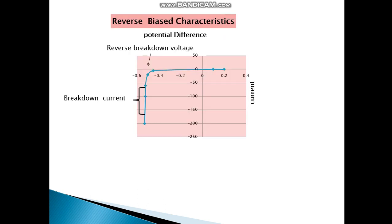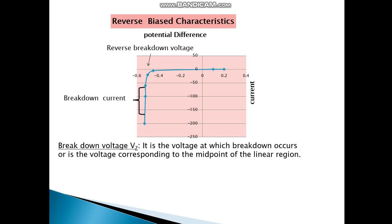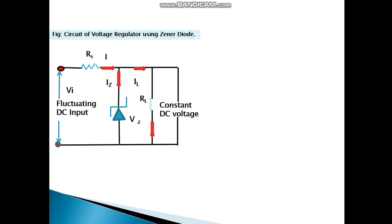This is the reverse bias characteristic, the breakdown voltage. It is the voltage which breakdown occurs, or is the voltage corresponding to the midpoint of the linear region. Breakdown current is the current corresponding to the midpoint of the linear region. That's the circuit again, the voltage regulator converting fluctuating input into constant DC voltage.